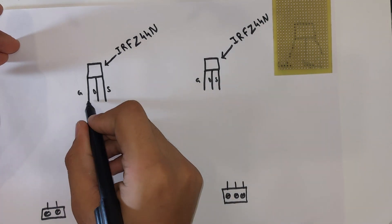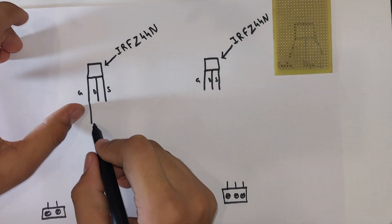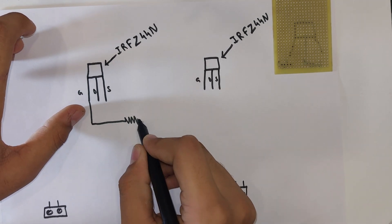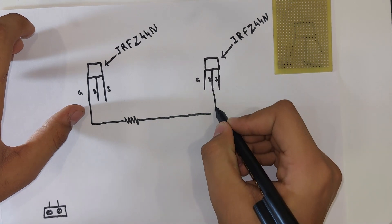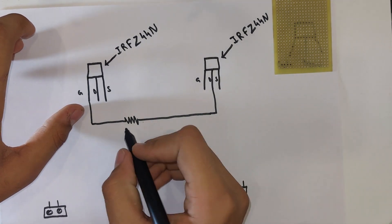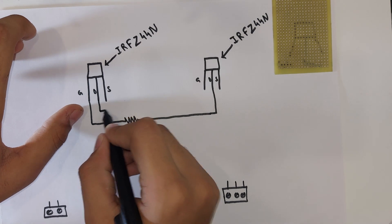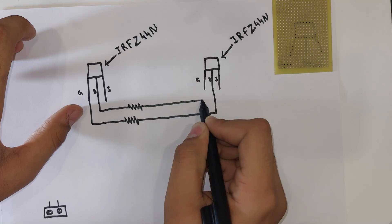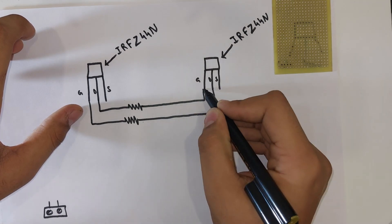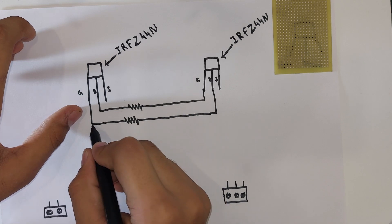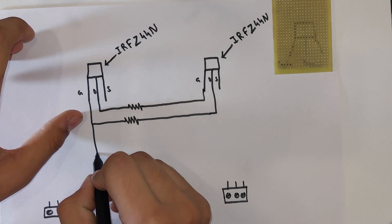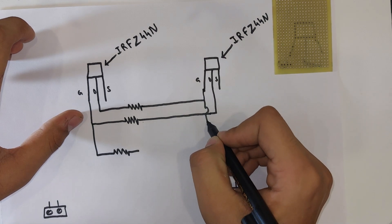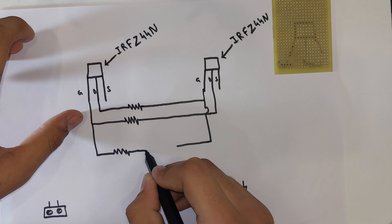First, we connect the gate of the first MOSFET to the resistor and connect to the other MOSFET drain terminal. The first drain terminal is connected to the resistor and the second terminal is connected to another terminal of the MOSFET. Then we take one more resistor from the gate terminal of both MOSFETs and join together.